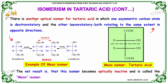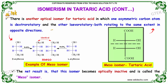There is another optical isomer of tartaric acid in which one asymmetric carbon atom is dextrorotatory and the other levorotatory, both rotating to the same extent in opposite directions. The net result is that this isomer becomes optically inactive and is called the meso isomer.